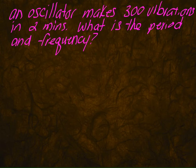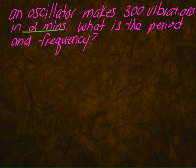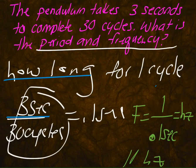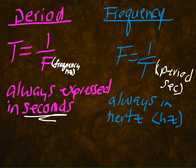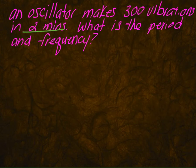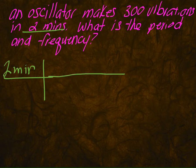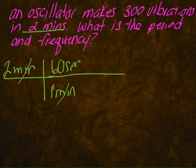An oscillator makes 300 vibrations in two minutes. What is the period and the frequency? There's something I really want to draw to your attention: it says two minutes. Period is always expressed in seconds, not minutes, so you're going to want to convert those to seconds. Two minutes — using dimensional analysis, one minute equals 60 seconds, these cancel out — two times 60 equals 120 seconds.